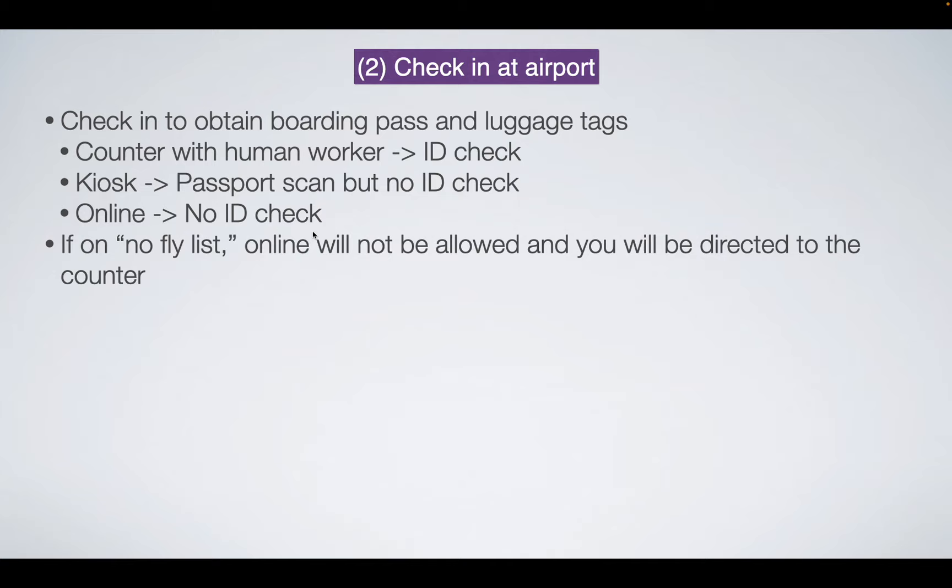Back to the no-fly list: the no-fly list check at the airport is where it often manifests. The real problem is that the list appears to be name-based rather than tied to passport numbers or biometrics. Obviously it would be naive to only use a name since many people share names, yet that seems to be what happens in practice based on news reports of children repeatedly being flagged.